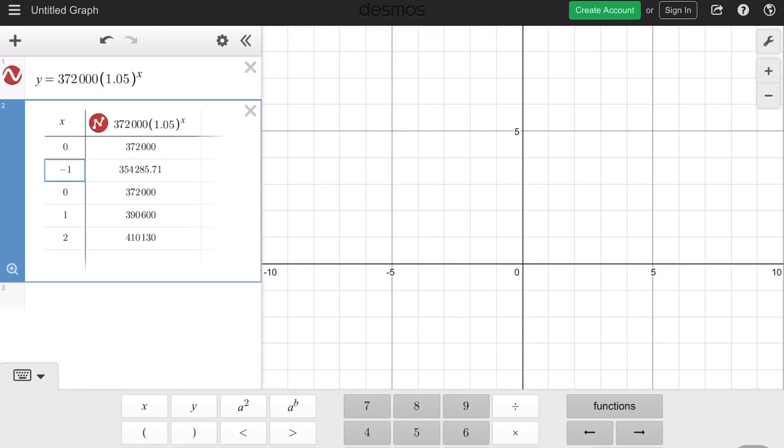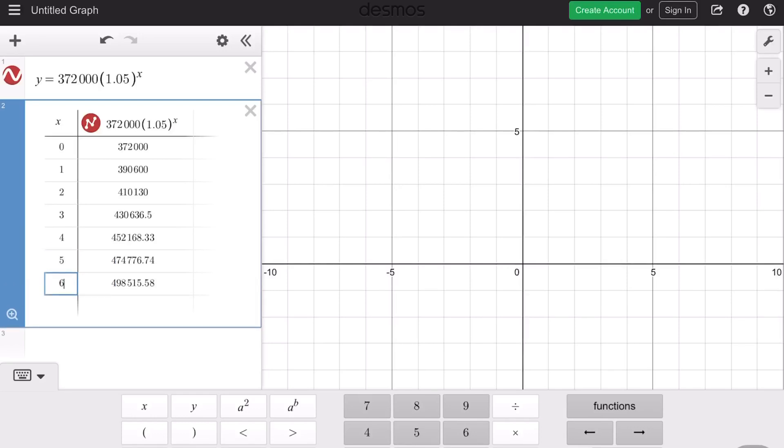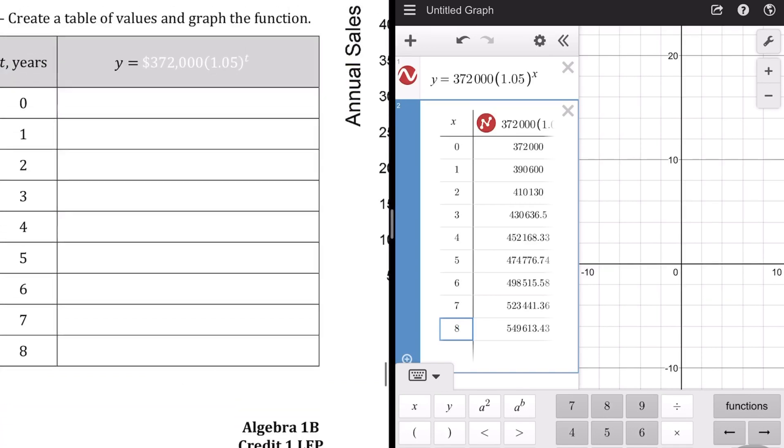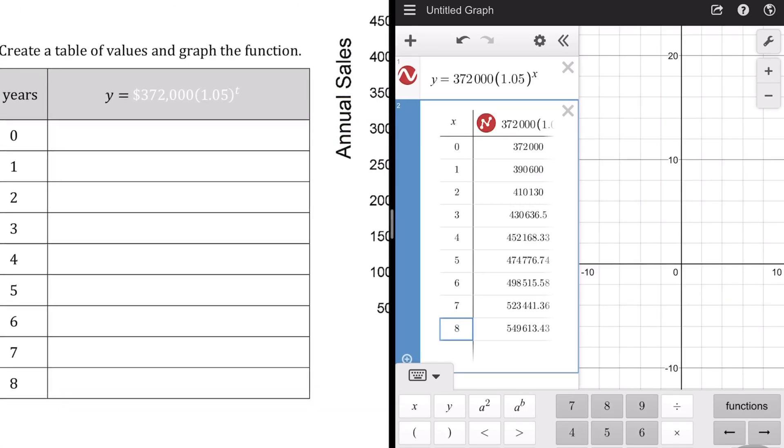Okay, and then if we go ahead and duplicate and make a table, we wanted the values, the domain values 0 through 8. So, 0, 1, 2, 3, 4, 5, 6, 7, and 8. And if you do that, you have the table nicely filled out there.